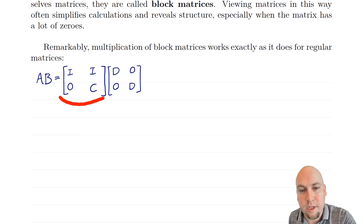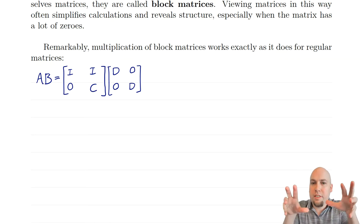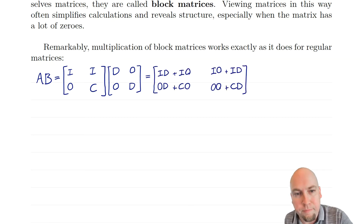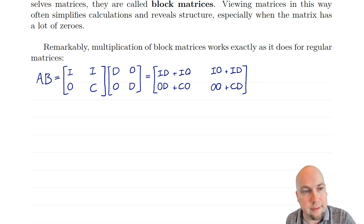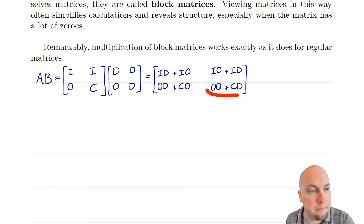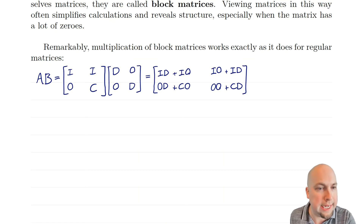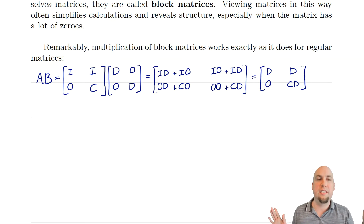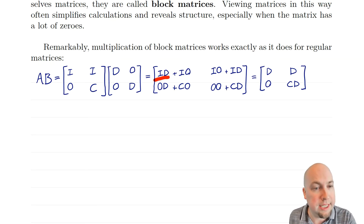Using the block forms of A and B, I naively do matrix multiplication — dot product of top row with left column, top row with right column, bottom row with left column, bottom row with right column. Top left: I×D + I×0. Top right: I×0 + I×D. Bottom left: 0×D + C×0. Bottom right: 0×0 + C×D. Simplifying: multiplying by an identity doesn't change anything, and anything times zero goes away. So I'm left with D, D, zero, and C×D.